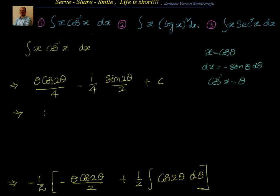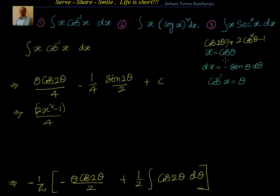Now we back-substitute. We know cos 2θ = 2cos²θ − 1. So cos 2θ in terms of x is 2x² − 1. Therefore we write (2x² − 1) / 4 · θ, and θ = cos⁻¹x. Then for the sin 2θ term: sin 2θ = 2 sin θ cos θ.